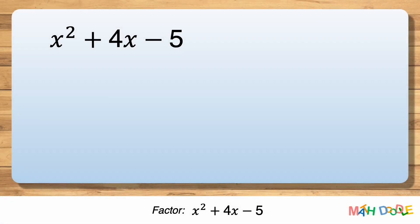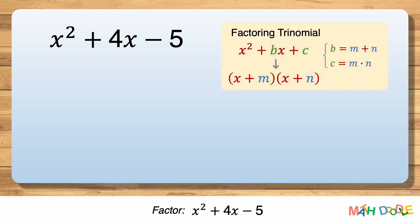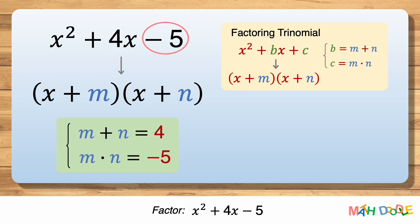To factor this trinomial, let's use this property as a guide. To transform this trinomial into the form of x plus m times x plus n, we must find the values of m and n. We know m plus n is 4 and m times n is minus 5. So our goal is to find two numbers that add to 4 and multiply to minus 5.